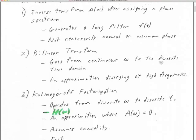We have three ways of doing spectral factorization. We can use the Hilbert transform: we take the log of our desired amplitude spectrum, take the Hilbert transform of that log, and it basically comes up with the phase spectrum. That's one way of doing it. Through the Hilbert transform, that was causal, and we have to talk about whether it's minimum phase.